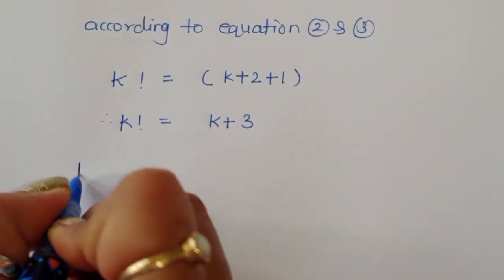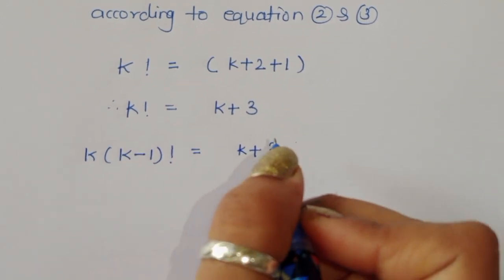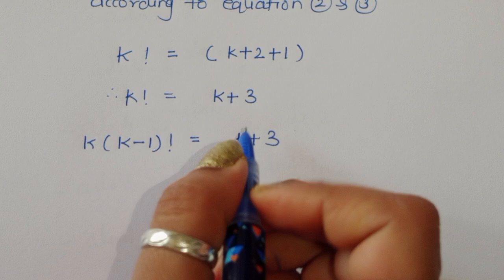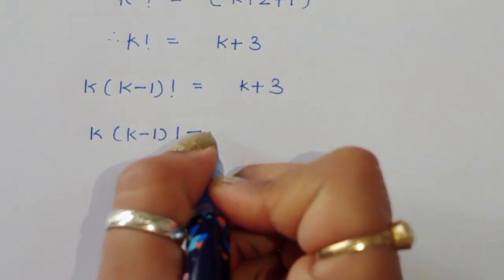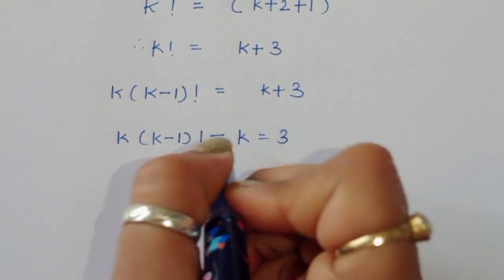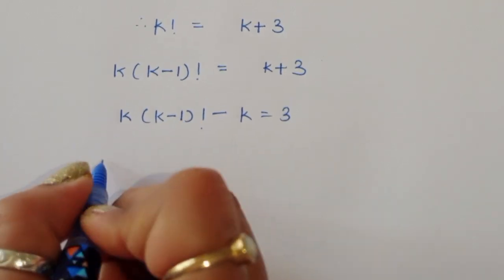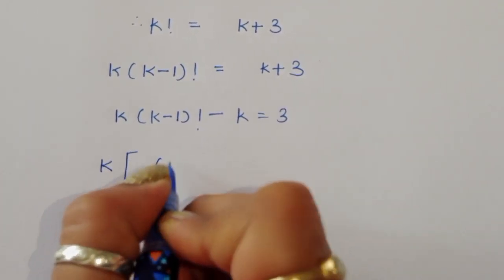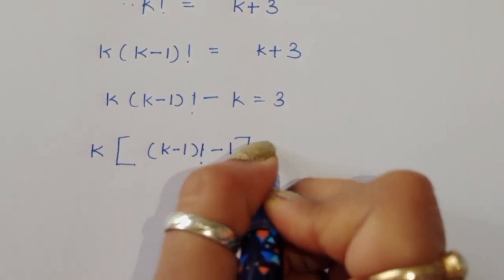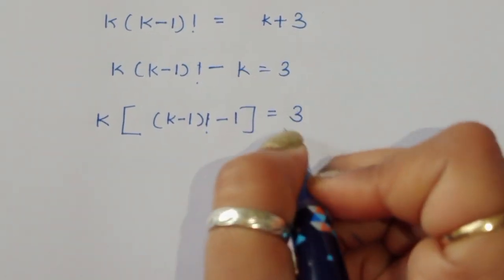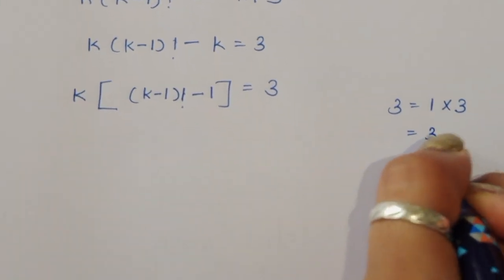We can write factorial of k as k times (k minus 1) factorial, so: k times (k minus 1) factorial equals k plus 3. Rearranging, k times (k minus 1) factorial minus k equals 3, and taking k common: k times [(k minus 1) factorial minus 1] equals 3. Now we need to find factor pairs of 3.